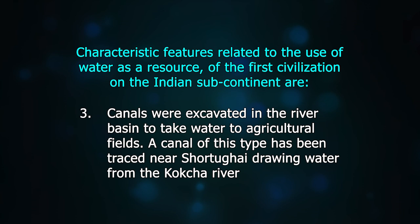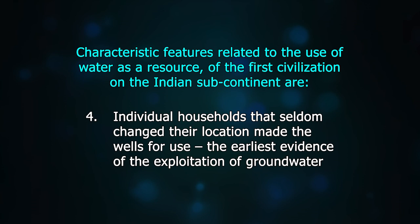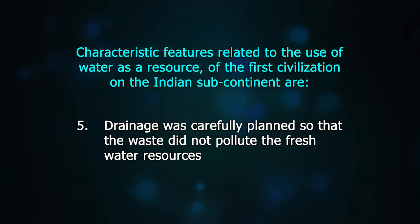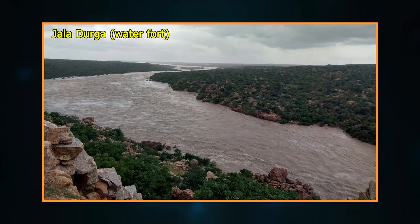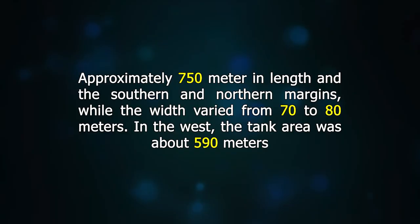Individual households that seldom changed their location made wells for use. The earliest evidence of exploitation of groundwater was carefully planned so that waste did not pollute fresh water resources. Towns like Dholavira, surrounded by brackish water, paid great attention to water storage. At its peak, the entire city might have looked like a lake city or a 'Jala Durga.' The area reserved for tanks was immense — approximately 750 meters in length along the southern and northern margins, while the width varied from 70 to 80 meters in the west; the tank area was about 590 meters. Special and vulnerable areas, mostly on the exterior face, were encased with hammer-dressed stones.